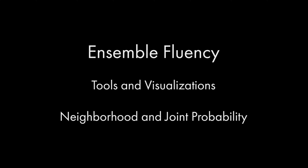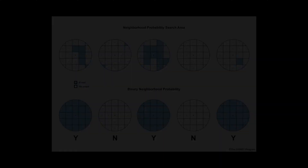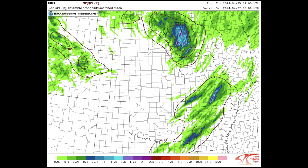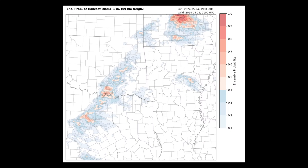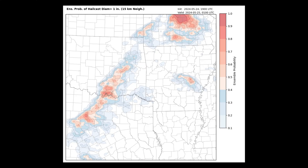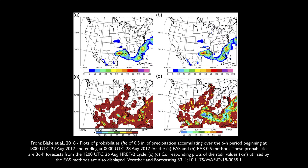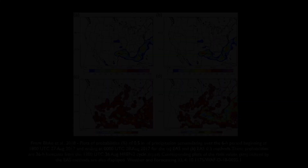Neighborhood probability is a way to find the probability of occurrence for a discrete event over a limited search radius. This approach can help reduce problems due to local terrain influences, isolated convection, localized heavy rainfall, and other events that may be washed out on other displays of ensemble information. Neighborhood probabilities translate into the Ensemble Agreement Scale, showing how well the different ensemble members pick up on the potential for localized hazardous weather events.